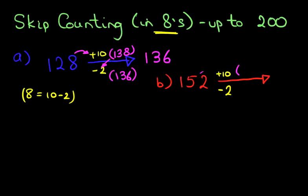So adding 10, 152 plus 10 is 162. Don't forget, the tens changes, the units never changes if we are adding 10. And now we're going to subtract 2. 162 minus 2 is 160. That is our answer, 160.